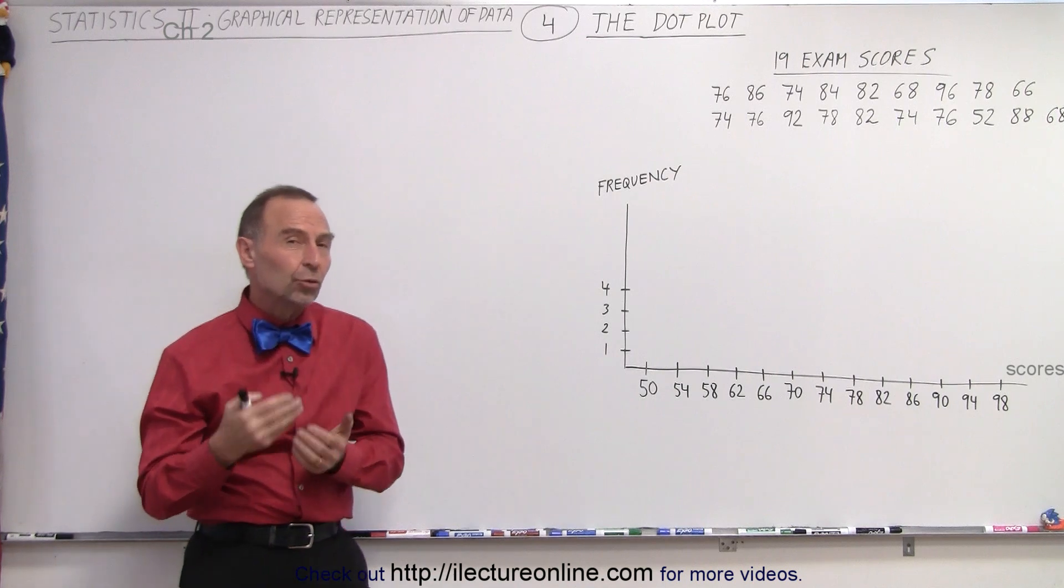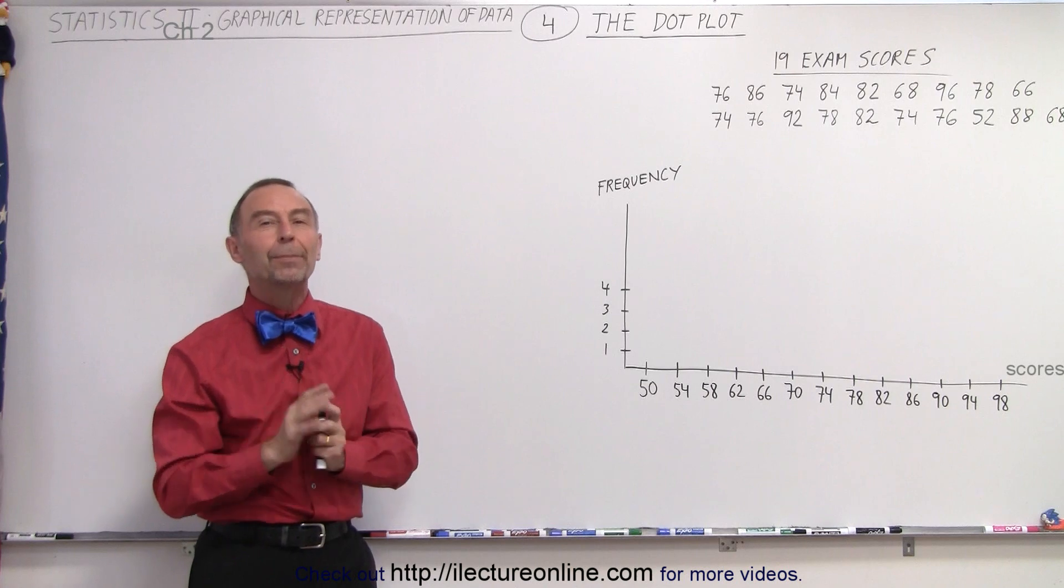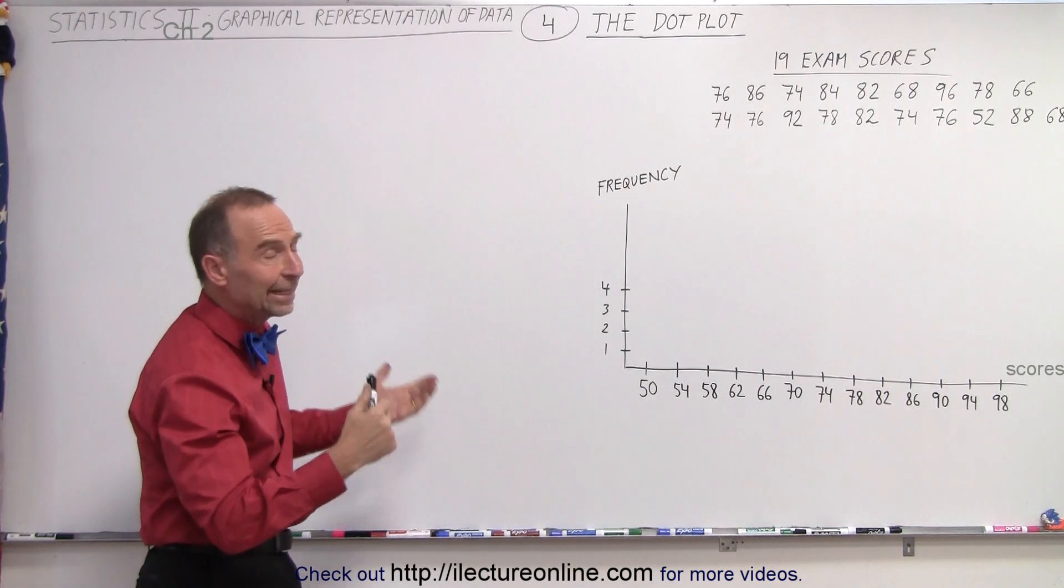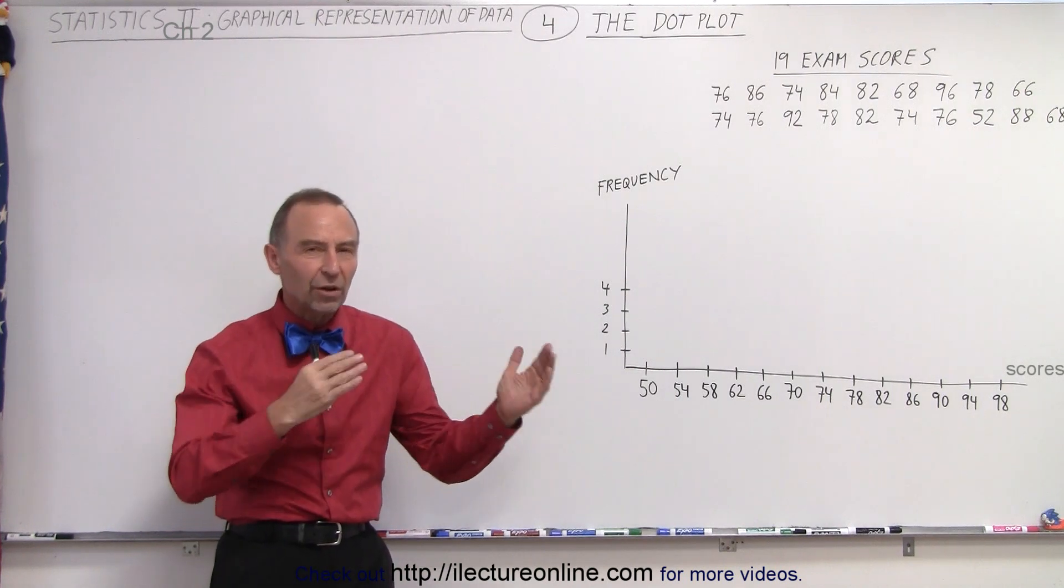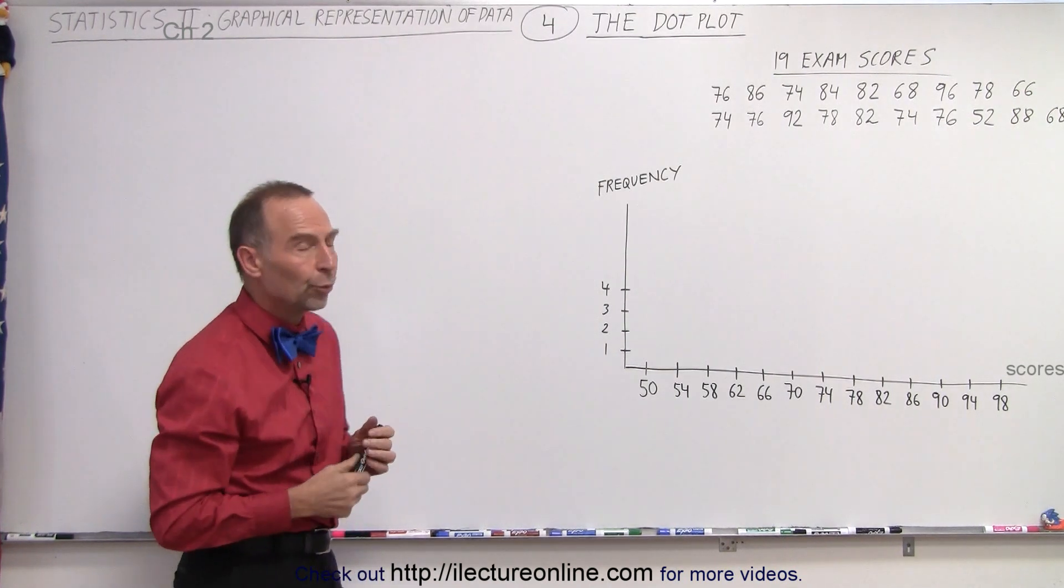The advantage to a dot plot is that you can immediately graph it from the data without having to manipulate the data first. So let's say we have a raw data set of 19 exam scores and we quickly want to see what that distribution is and what the frequency is for each grade type.